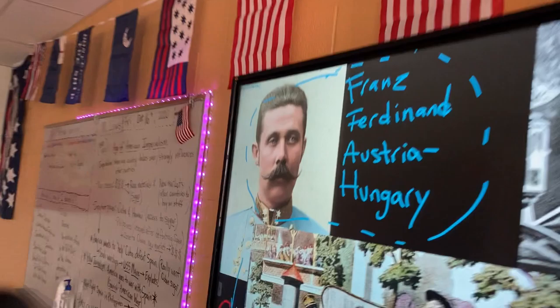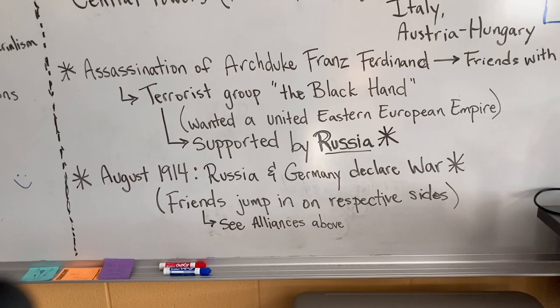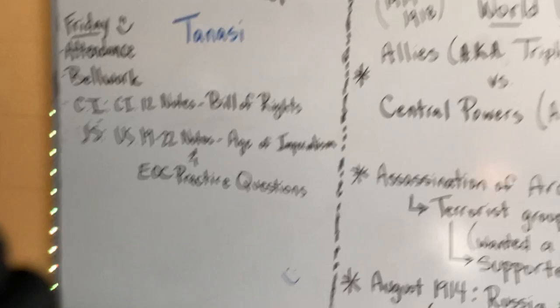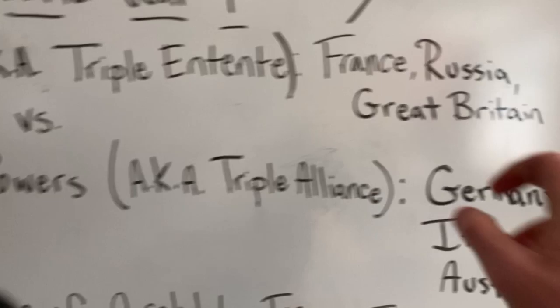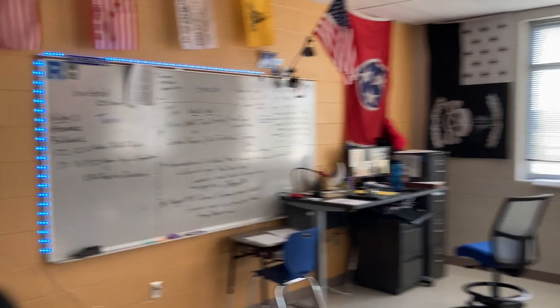Franz Ferdinand was friends with Germany. The terrorist group, the Black Hand, wanted a united Eastern European Empire, and Franz Ferdinand — from Austria-Hungary, which is friends with Germany — said no. The Serbians are supported by Russia. By August 1914, Russia and Germany declare war, and all the alliances have to jump in too, because they're all friends.